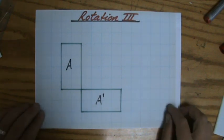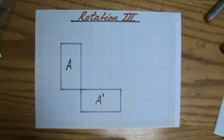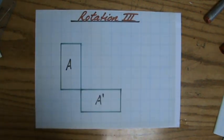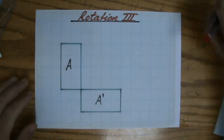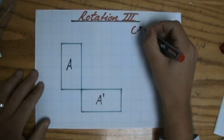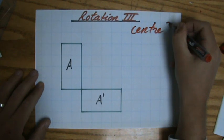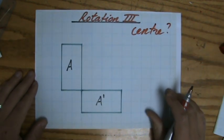But what are we going to do now? I have a particular object, and I have its image after a rotation. And the question now is, where is the center of rotation?